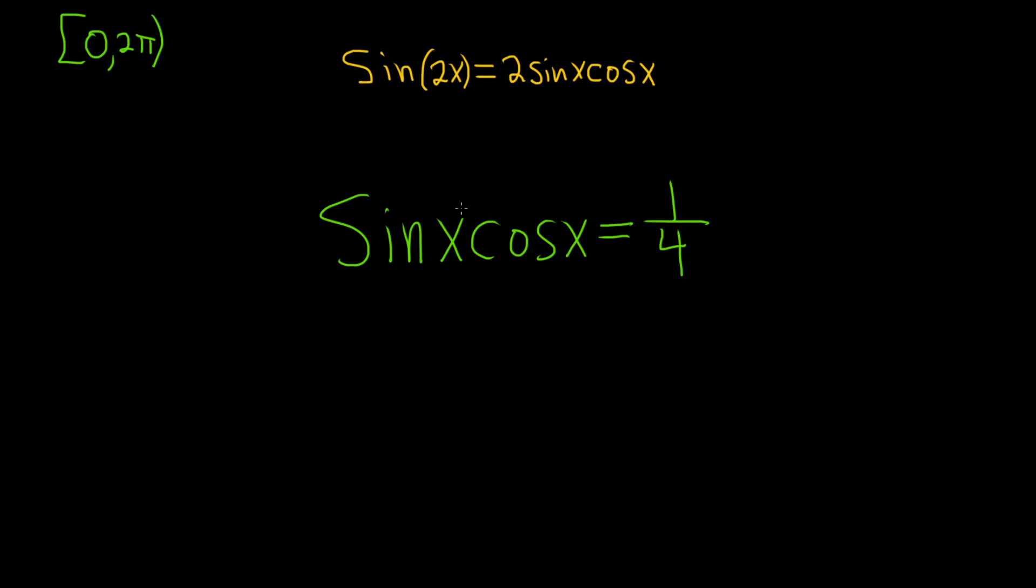And so in this problem here, we almost have this. We have sin x, cos x. We're just missing the 2. So let's go ahead and put it there. So multiplying both sides by 2. So 2 sin x cos x equals 2 times 1 over 4.